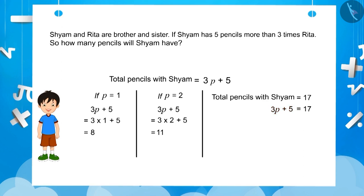By observing this equation, we find that the 17 pencils of Shyam depend on the number of pencils with Rita because Shyam will always have 5 pencils more than 3 times Rita's. So, we can say that an equation always represents the condition on the variable.